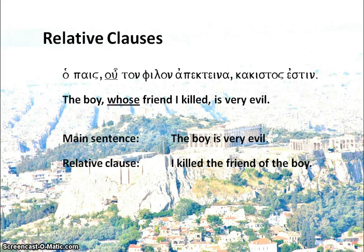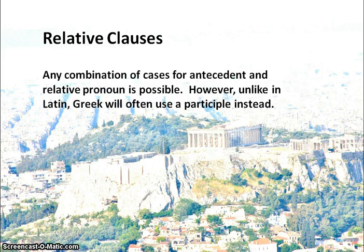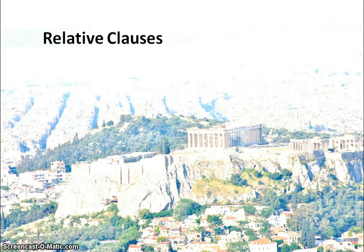There is actually any combination of cases for the antecedent and relative pronoun that is possible, so they can sometimes be in the same case, but quite often they will be in different cases. And in fact, unlike in Latin, Greek will often use a participle instead of a relative clause.